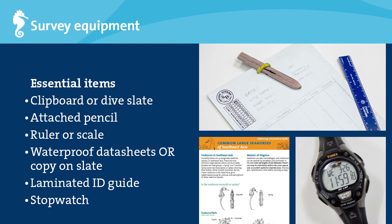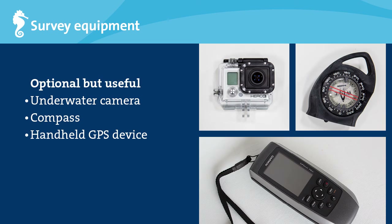Ready to survey? Here is a list of recommended survey items: a clipboard or dive slate with an attached pencil; a ruler or scale for measuring seahorses; survey data sheets that can be printed on waterproof paper or copied on the slate; a laminated seahorse identification guide and seahorse survey handout; and a stopwatch. The next items are optional but useful: an underwater or waterproof camera; a compass and a handheld GPS unit. If you don't have a GPS unit, many smartphones and GPS-enabled cameras can capture GPS coordinates as well.